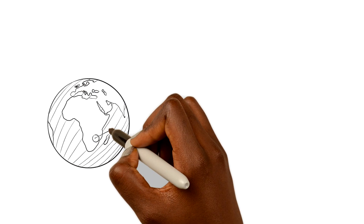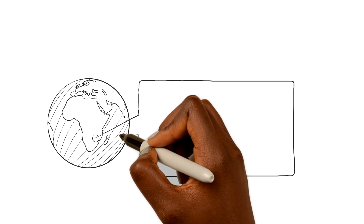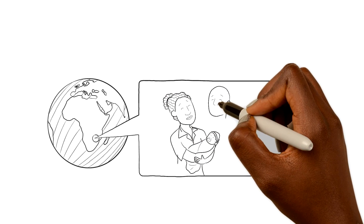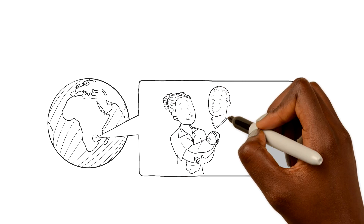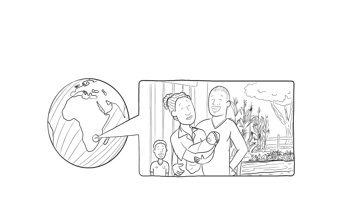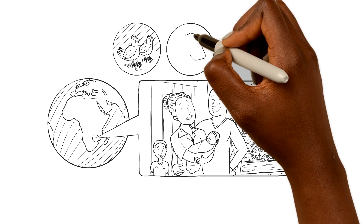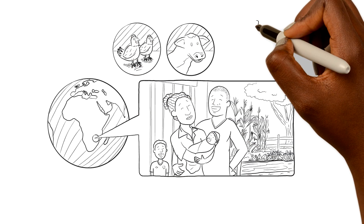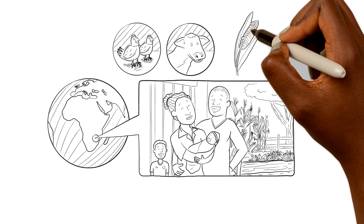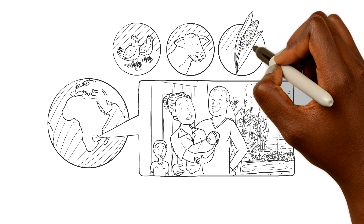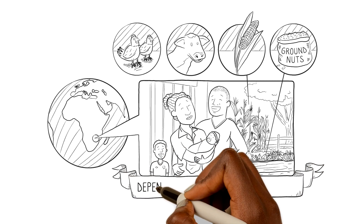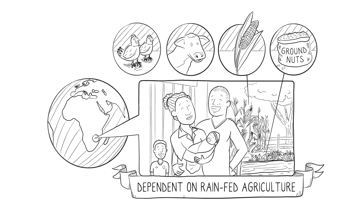Let's travel to Zimbabwe. Meet Jane, a 25-year-old farmer who lives with her husband and their two young children. She owns some chickens, a cow, and farms on a small plot of land where she mainly grows maize and groundnuts, so the family is fully dependent on rain-fed agriculture.